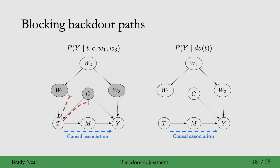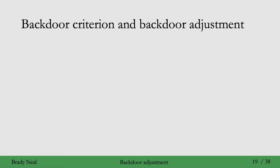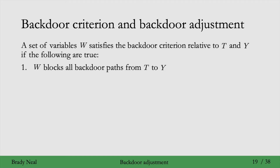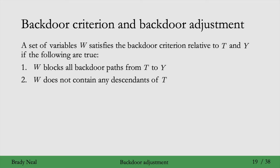With that intuition in mind, we'll now introduce the backdoor adjustment and the important backdoor criterion that's necessary to get the backdoor adjustment. We say that a set of variables w satisfies the backdoor criterion relative to treatment and outcome if: first, w blocks all backdoor paths from t to y; and second, w does not contain any descendants of treatment. This second part may be less obvious, and we'll cover it in more detail in a few slides.